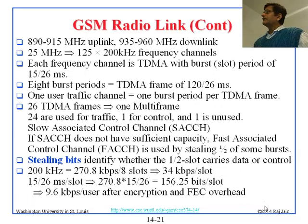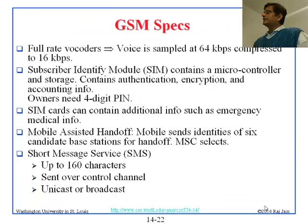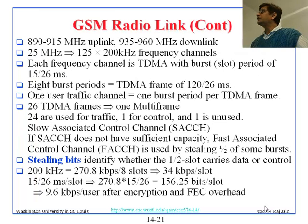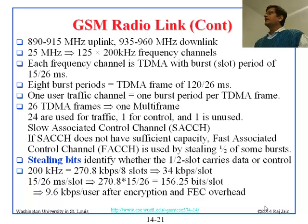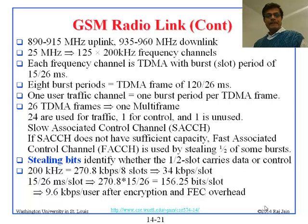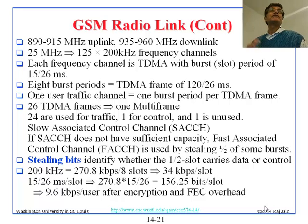Even though each user gets 36 kilobits per second, by the time all the tail bits and everything else is removed, you get 9.6 kilobits per second. And that matches very well with the 9600 baud modems people used to have before. That was the popular data rate in that time frame.